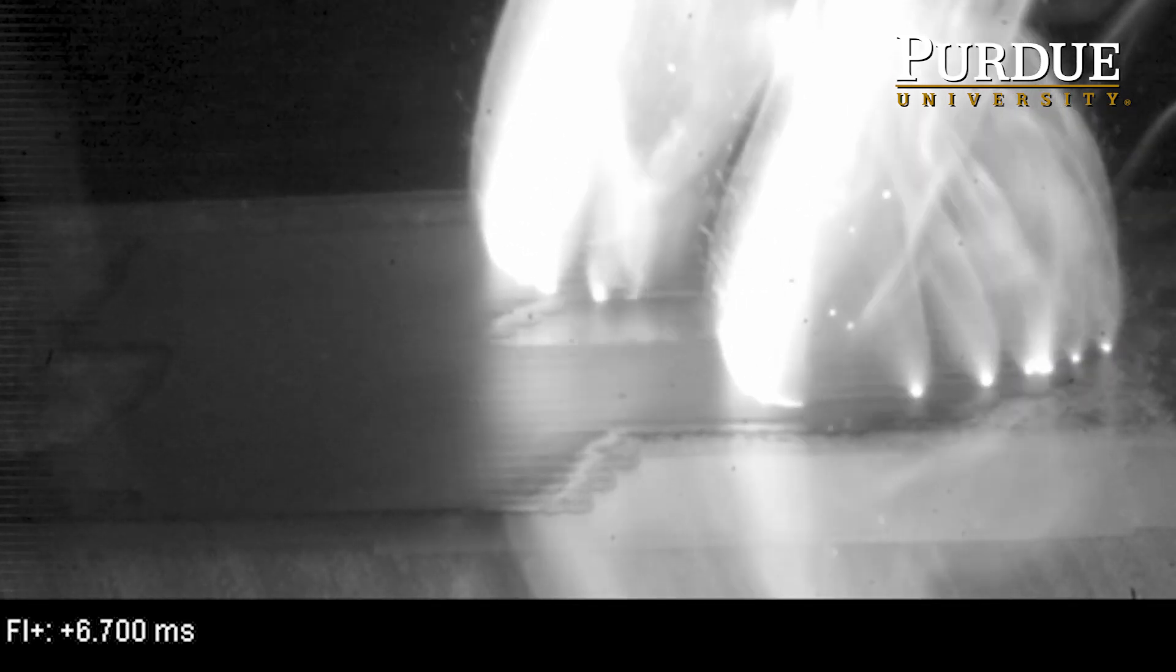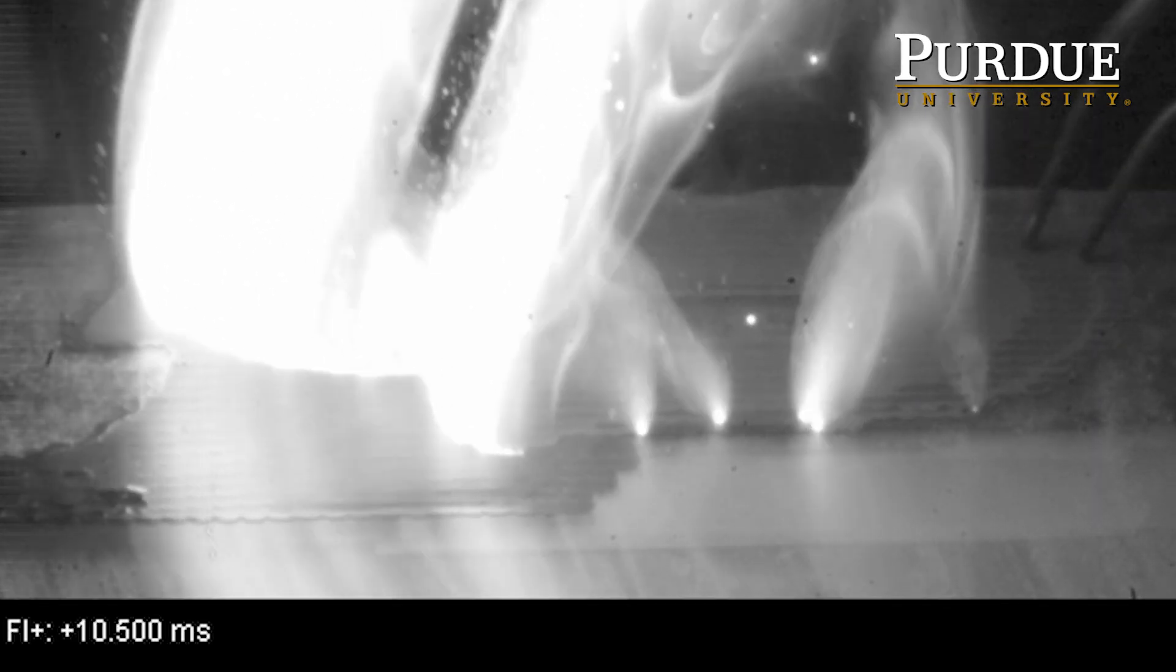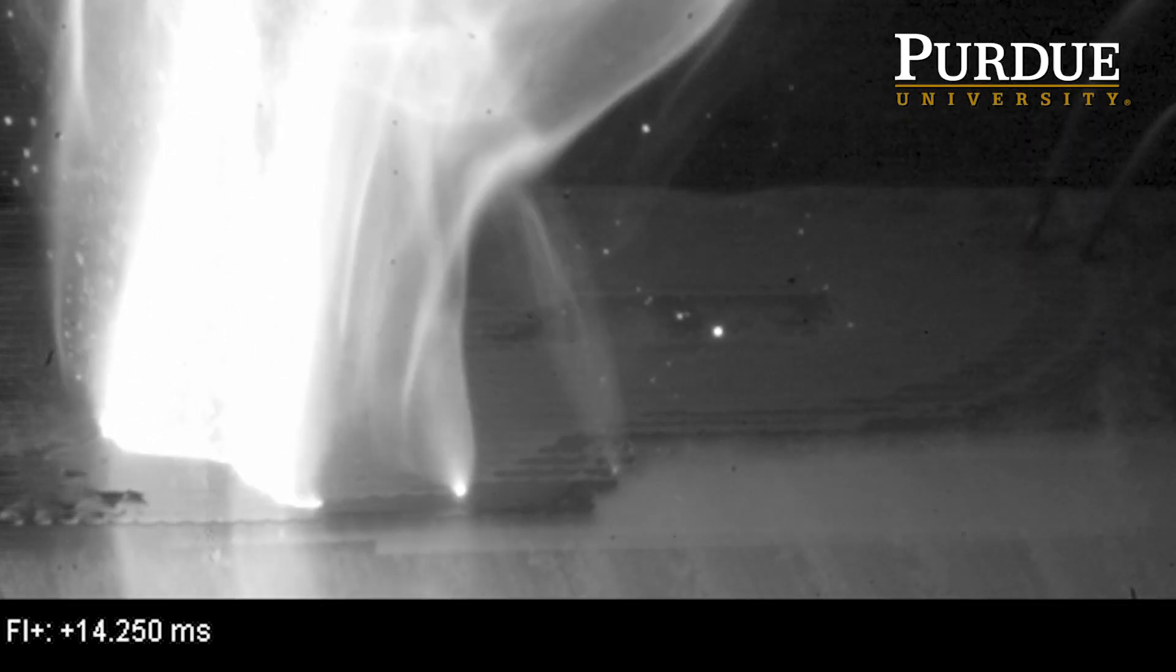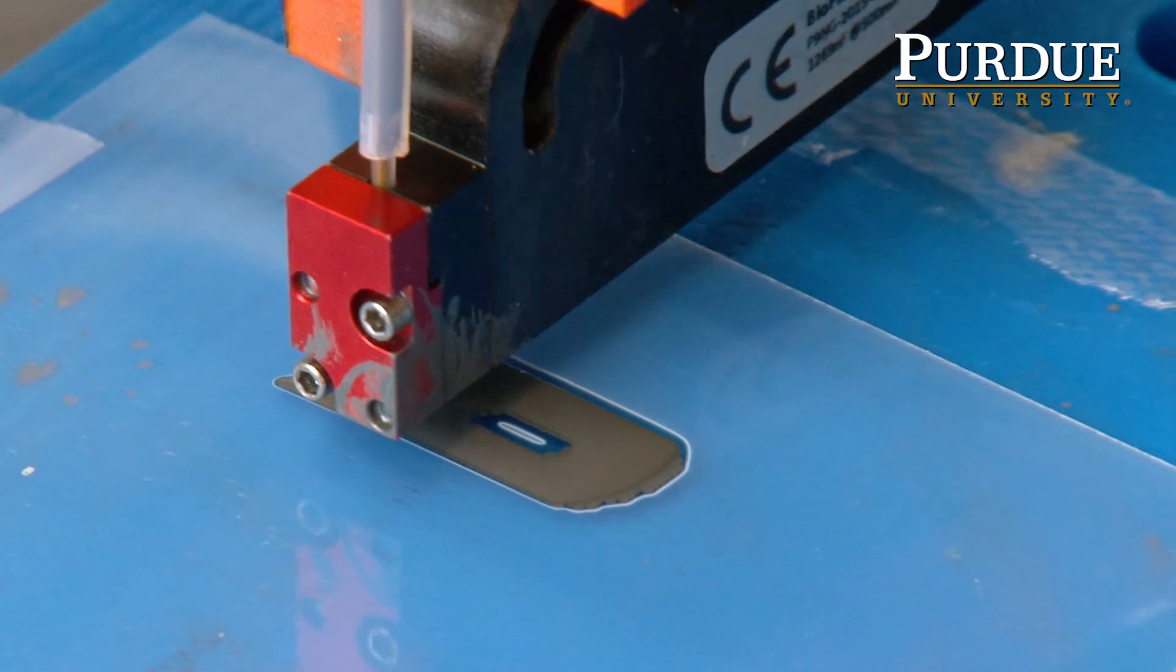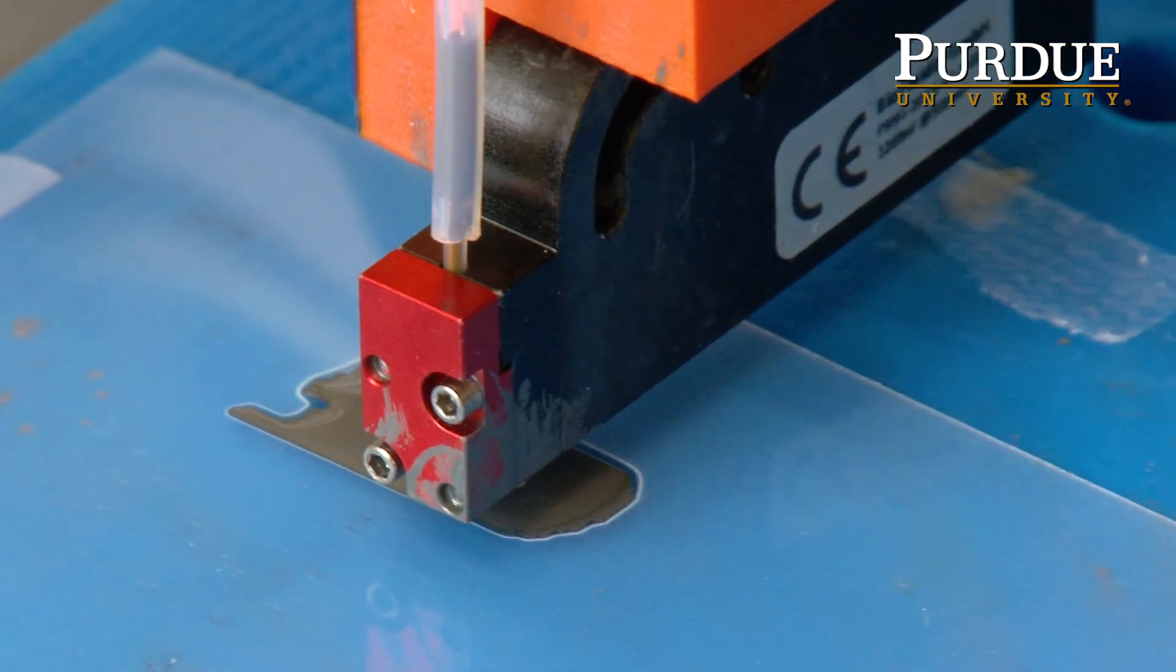What we're doing is printing energetic materials—basically something that can react when given a bit of initiation energy. We're using nanothermites, which is a metal and a metal oxide, and being able to print them onto a wide array of substrates.